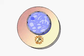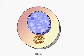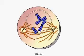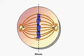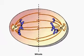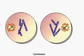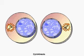Cell division consists of two processes, mitosis and cytokinesis. Mitosis, division of the nucleus and its chromosomes, is divided into five phases: prophase, prometaphase, metaphase, anaphase, and telophase. Mitosis is followed by cytokinesis, when the cytoplasm splits to form two separate daughter cells.